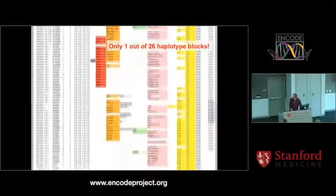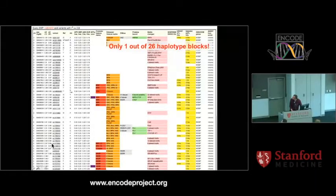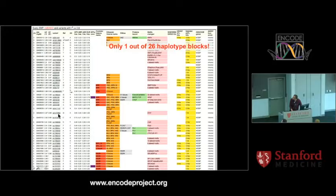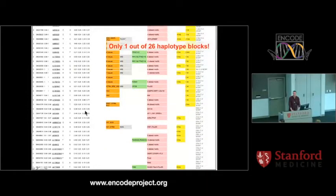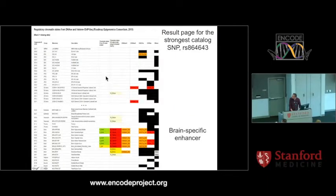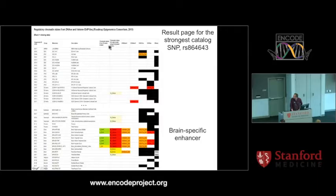What I'm showing you here is only one out of these 26 haplotype blocks. All of these SNPs are in very strong LD, as you can see in this column here, with our lead SNP. That means all of these are very good candidates for further studying the regulatory mechanism underlying that particular locus. You can also see the tag SNP up there in red. All of these are in very strong LD with our lead or tag SNP.